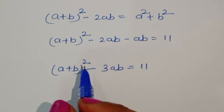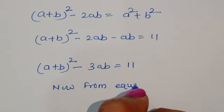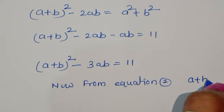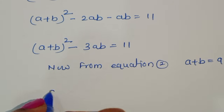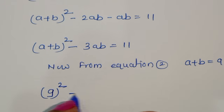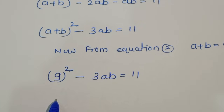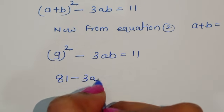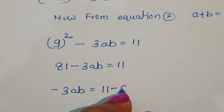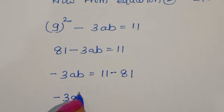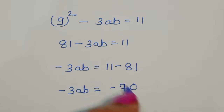From equation 2, a plus b equals 9. We substitute this value: 9 square minus 3ab equals 11. Now 9 squared is 81, so we have 81 minus 3ab equals 11. Therefore, minus 3ab equals 11 minus 81, which gives minus 3ab equals minus 70.